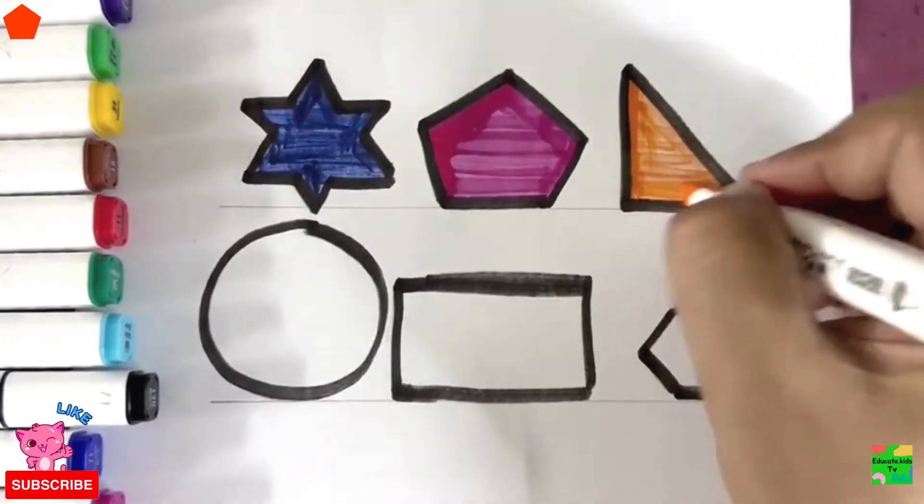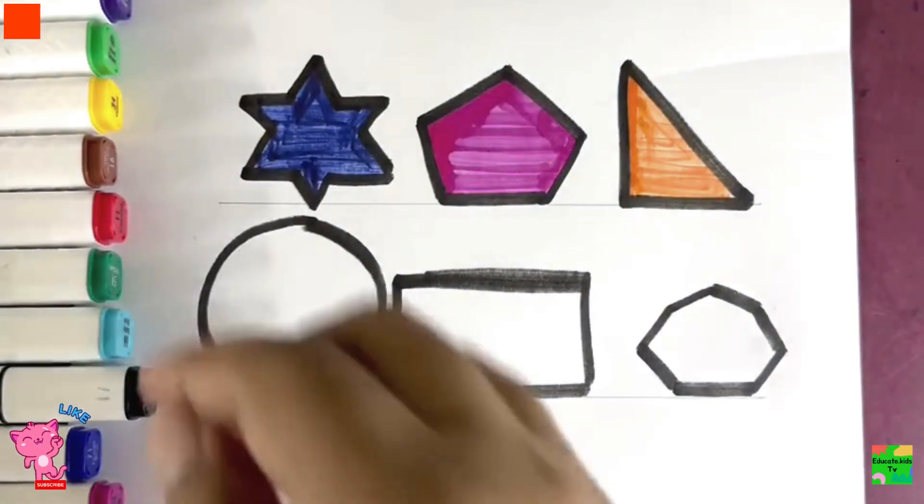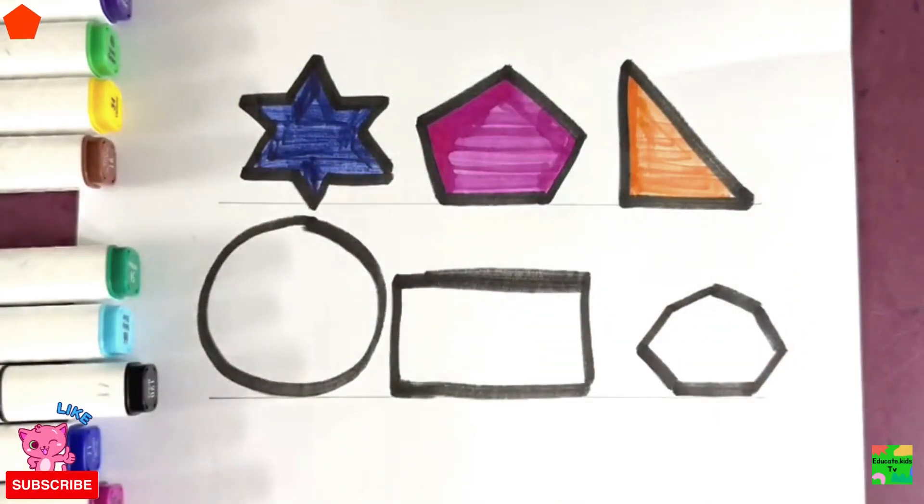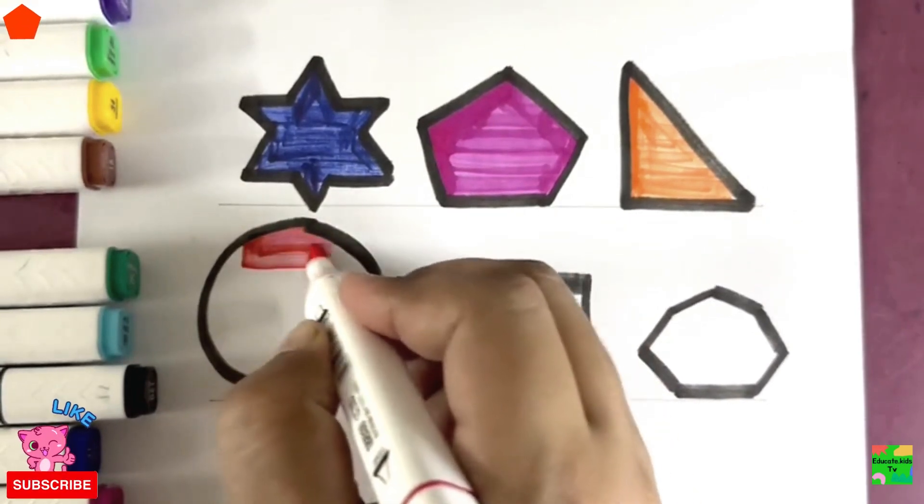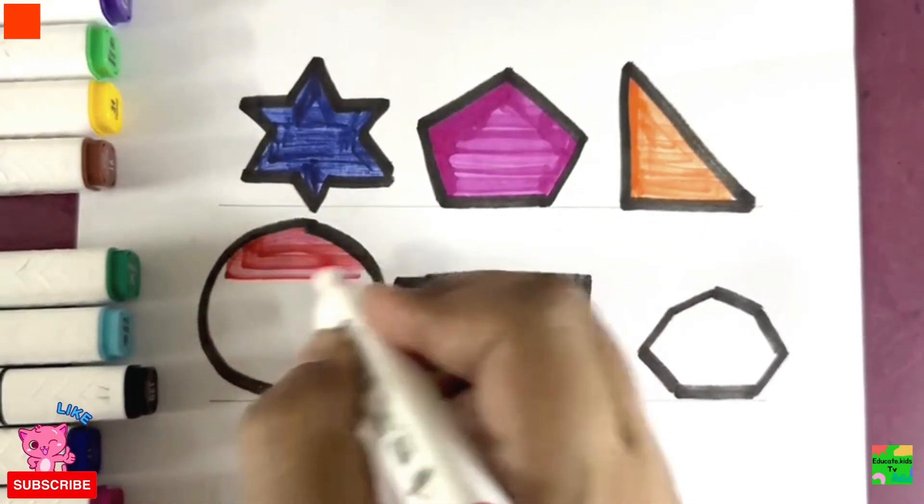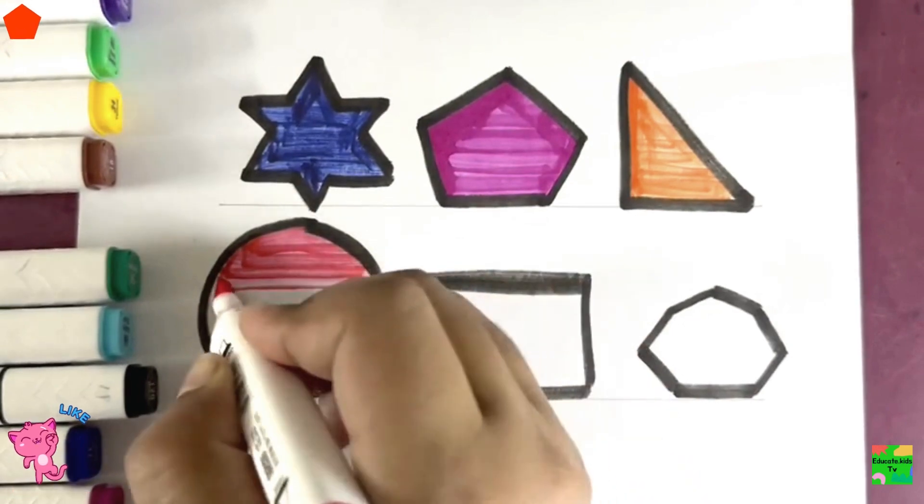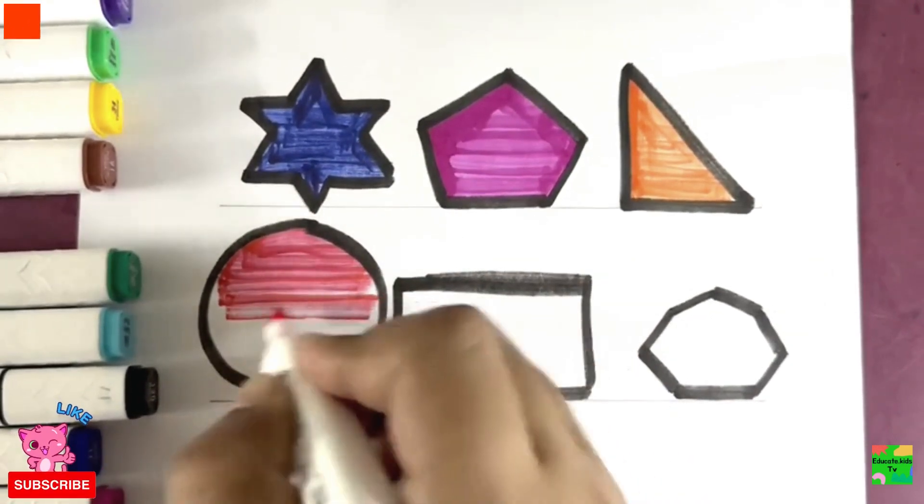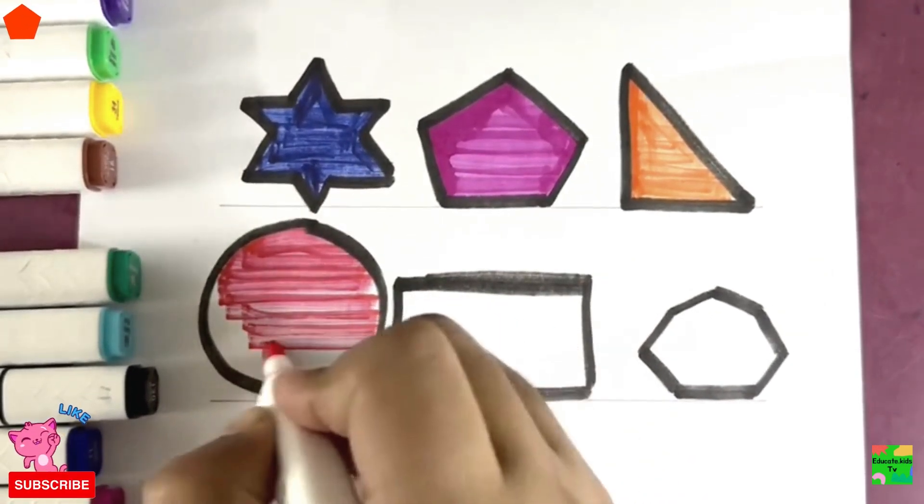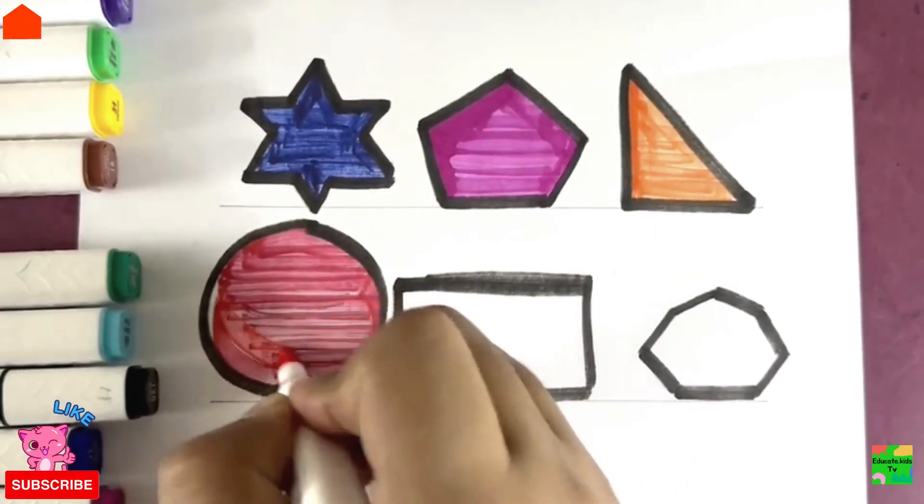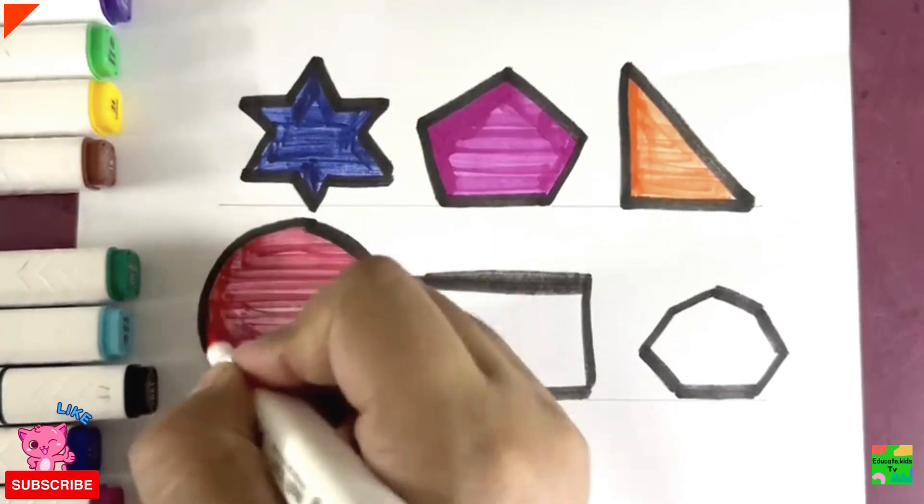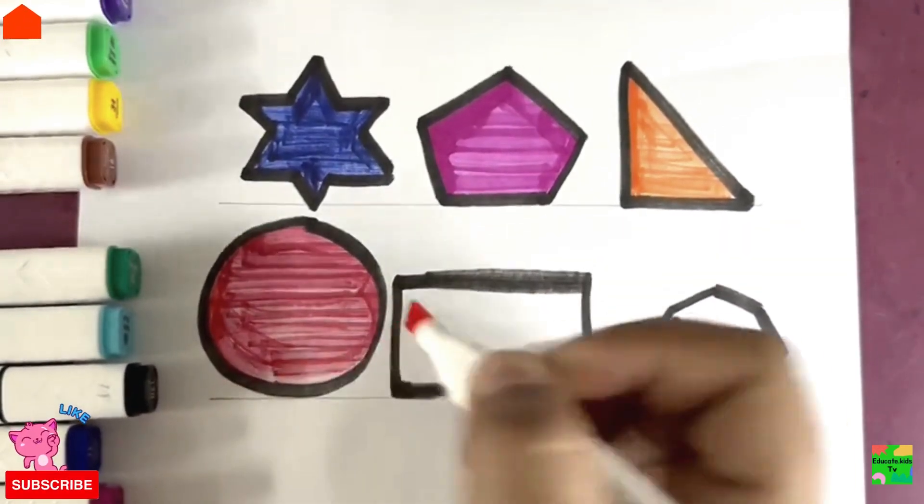I love drawing shapes and coloring them. Now it's circle. I'll color it with red color. Hooray! Red color. Wow! Nice! Isn't it?